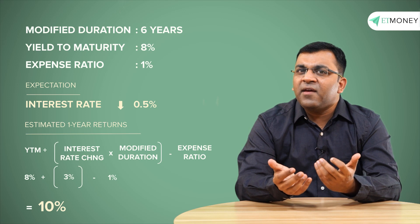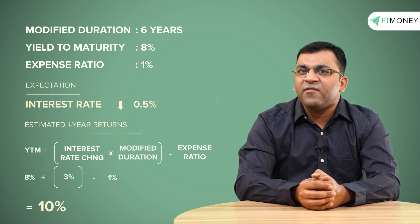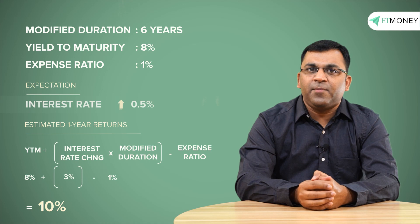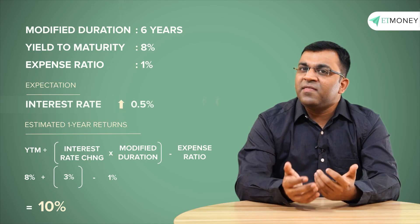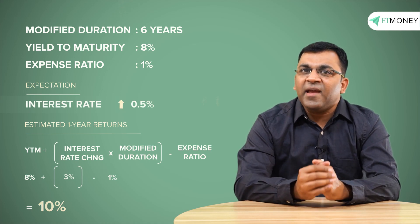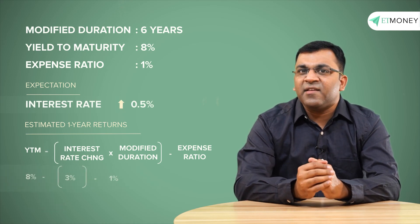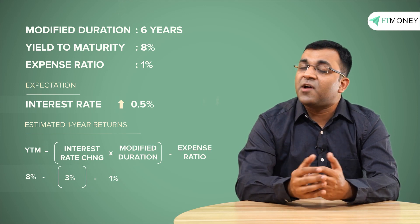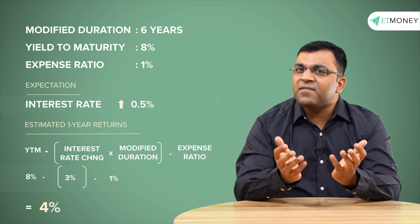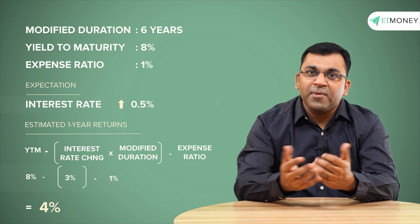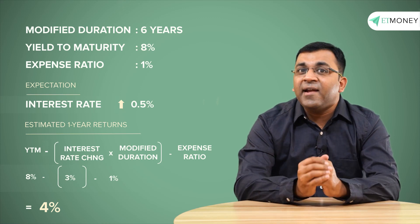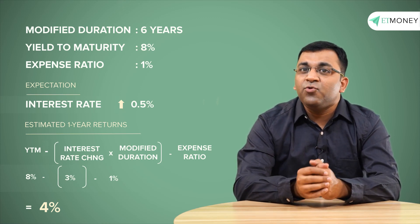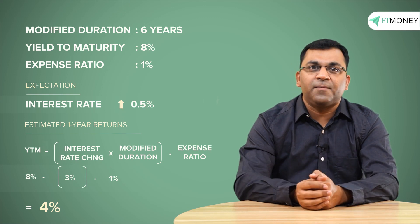Now, instead of the RBI reducing interest rates by 0.5%, say it increases the interest rate by 0.5%. In this case, the expected returns would be 8% − 3% − 1% expense ratio, which comes to 4%. Of course, this interest rate movement may or may not happen, but the idea here was to explain how you can practically use what we have learned in this video so far.